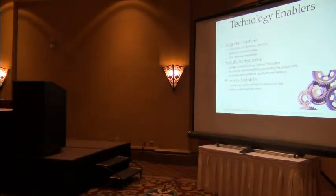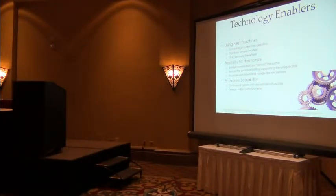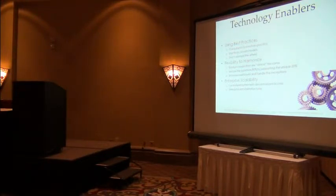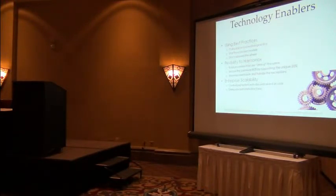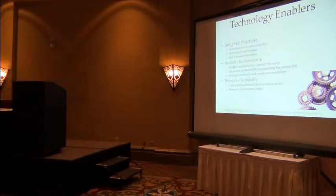For technology enablers, you want to use best practices — start with proven models you already have. The corrective action process is a good example: the 8D process might be common to most people's corrective action systems, even though there may be slight nuances. In a harmonized system, you don't want to reinvent the wheel — start with best practices. Most organizations have been doing things for years, so start with your best practice and evaluate which elements can be common across the board and which should be unique. You also want flexibility — the common 80% plus maybe 20% that might be unique to individual business units, locations, or departments.